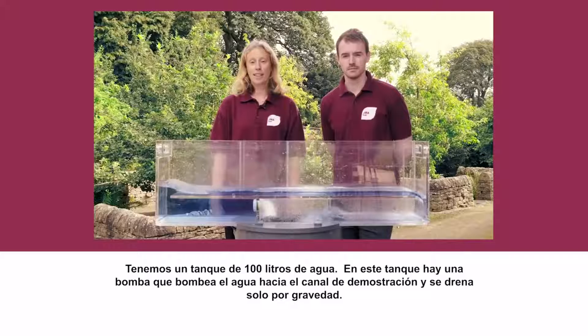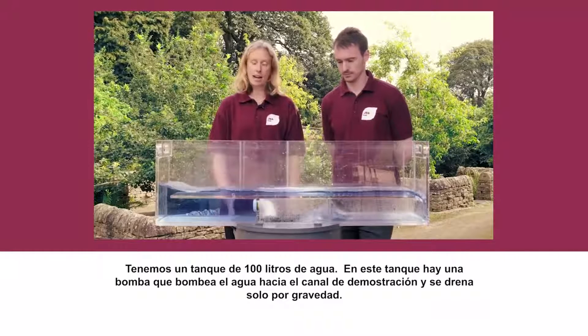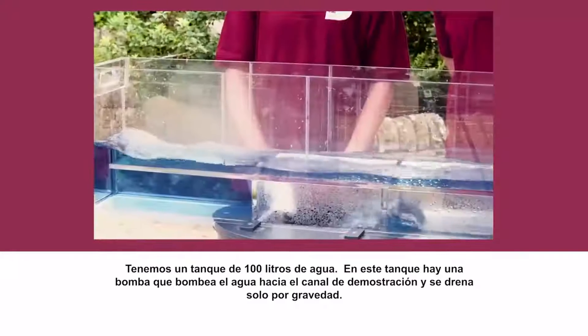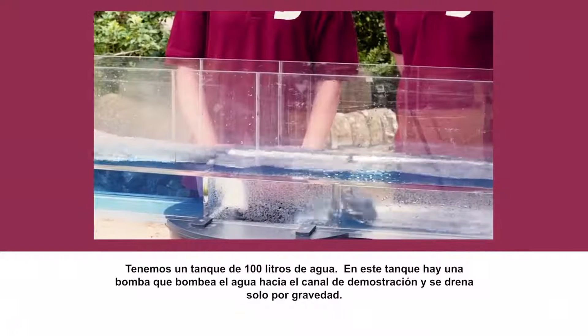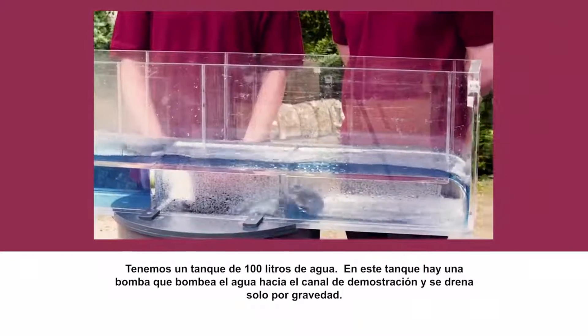We have a large grey tank containing about a hundred litres of water. In this tank there's a pump which pumps the water up into the flume channel and it drains back down by gravity.